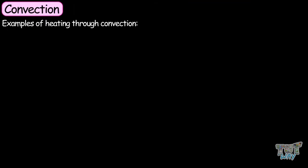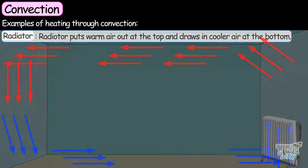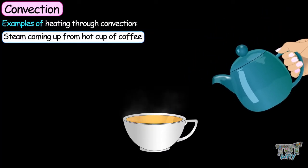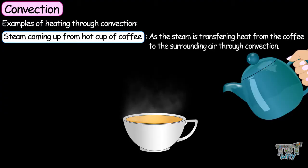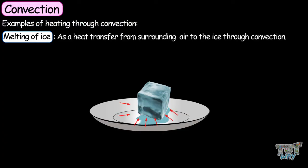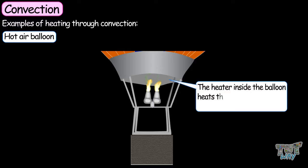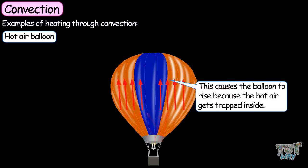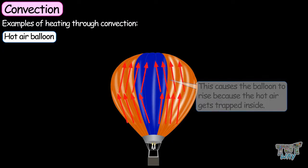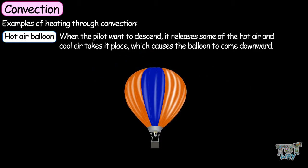Now let's look at some examples of heat transfer through convection. A radiator puts warm air out of the top and draws in cooler air at the bottom. Steam coming from a hot cup of coffee transfers heat from the coffee to the surrounding air through convection. Melting of ice is also an example, as heat transfers from the surrounding air to the ice. Hot air balloons are another example — the heater inside heats the air, which moves upward, causing the balloon to rise. When the pilot wants to descend, he releases some hot air and cool air takes its place, bringing the balloon downward.